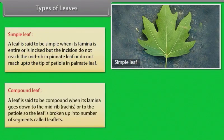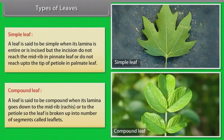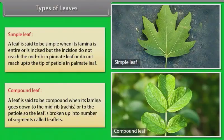Compound leaf: a leaf is said to be compound when its lamina goes down to the mid-rib, rachis, or to the petiole, so the leaf is broken up into number of segments called leaflets.